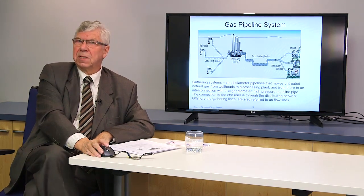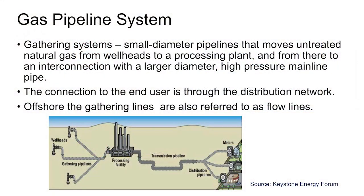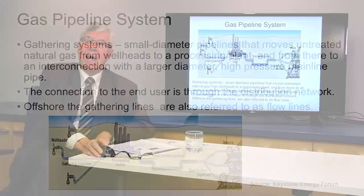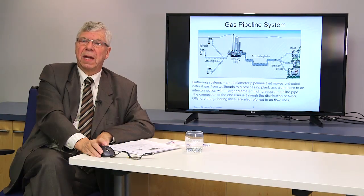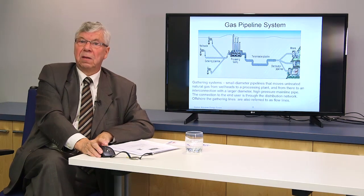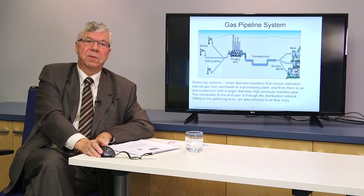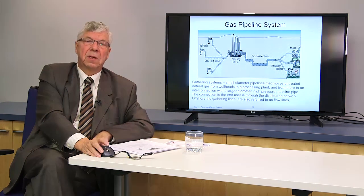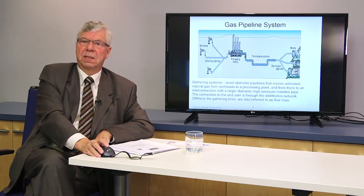A gas pipeline system is made up of three parts. Upstream we have the gathering pipelines that go from the wellhead to a processing plant. From the processing plant, a larger-diameter, higher-pressure pipeline conveys the fluid to the city gate, where it transfers into a network referred to as the distribution system.